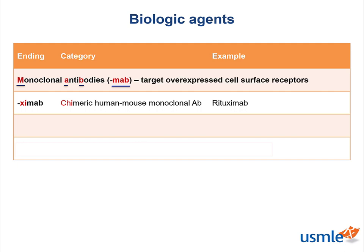Monoclonal antibodies are used to target overexpressed cell surface receptors. If 'mab' is the stem, let's continue to talk about substems.